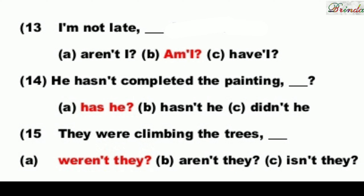Next: I am not late. 'I am' is present; since 'not' is already there, the positive tag is needed — 'am I'. Options: aren't I, am I, have. Answer is: am I. So: I am not late, am I?